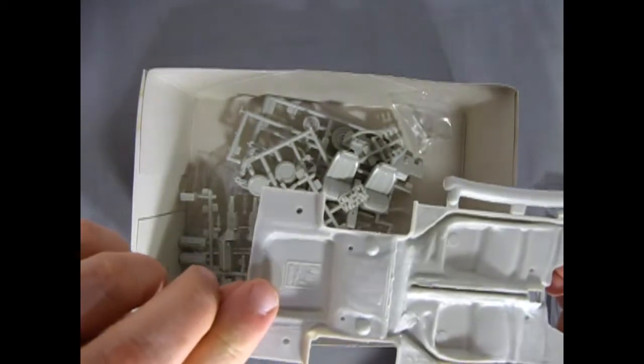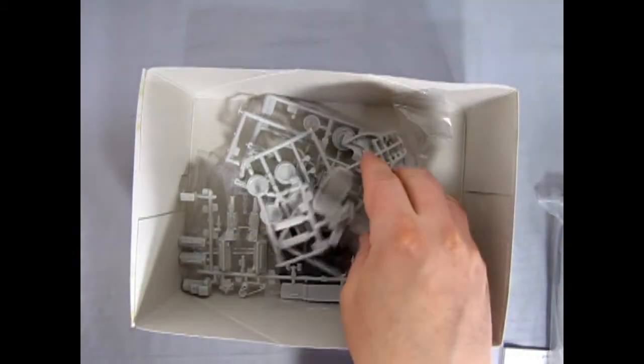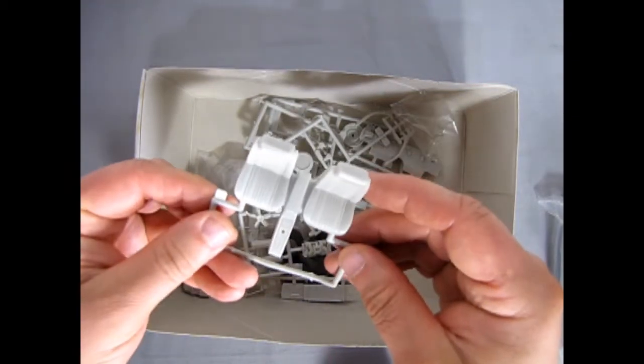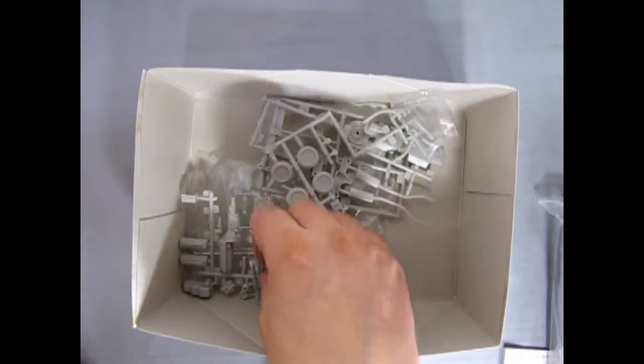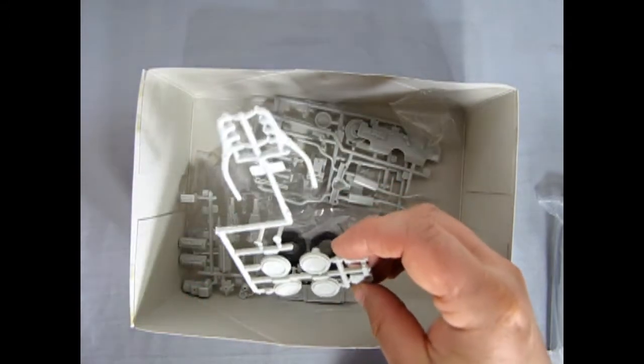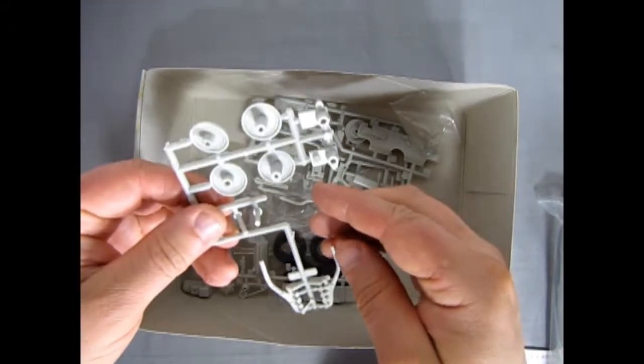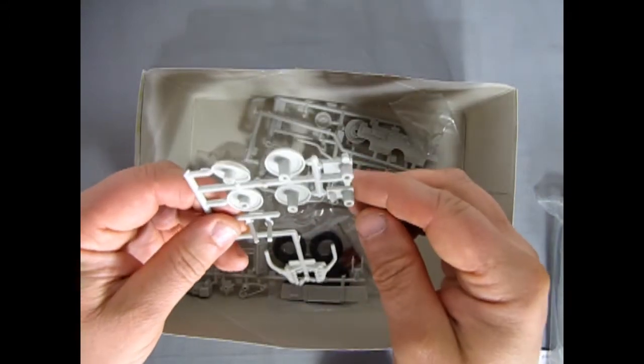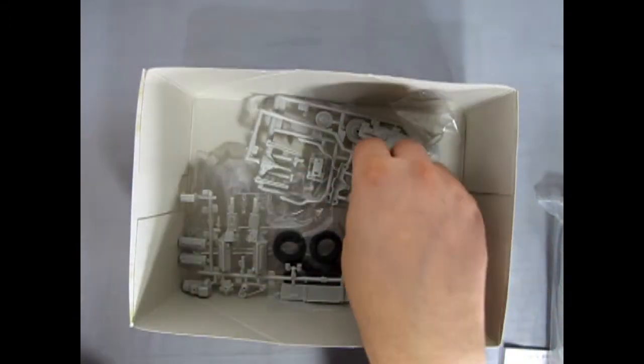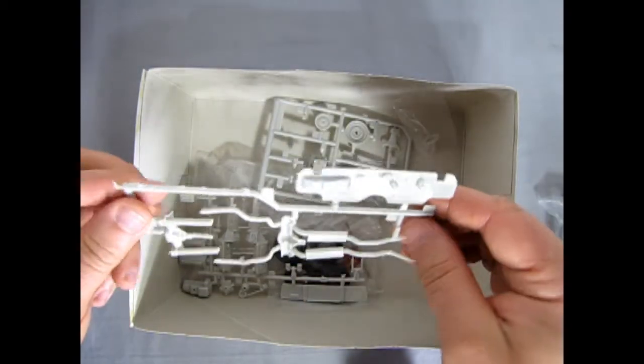Oh, the AMT Ertl logo inside there under the gas tank. Yep, those are the backs of the buckets. The console molded in place. Here we have our engine details, some suspension components. Oh, it's got those pins in there. Wow, look at how big those kingpins are. Okay, there's our rear axle and firewall.